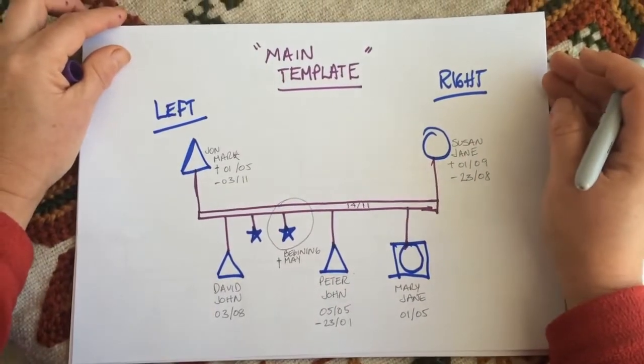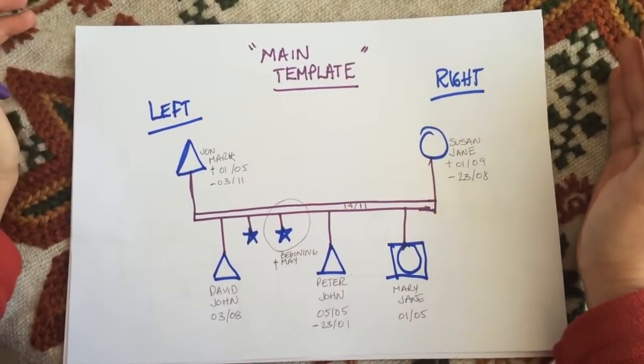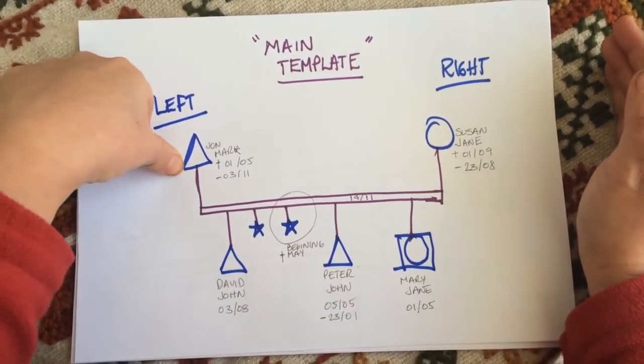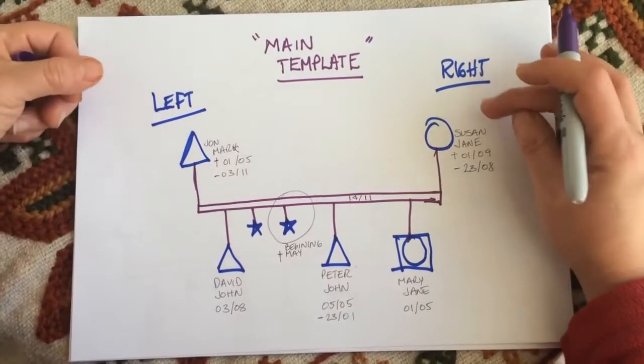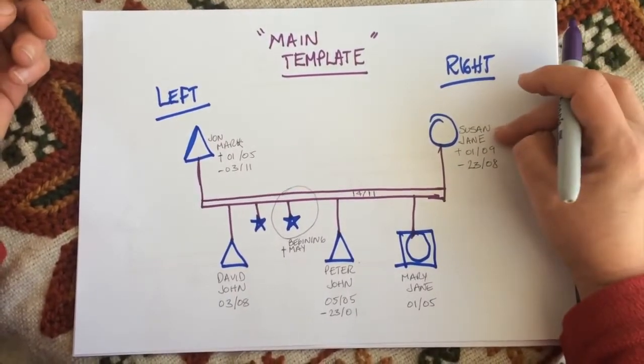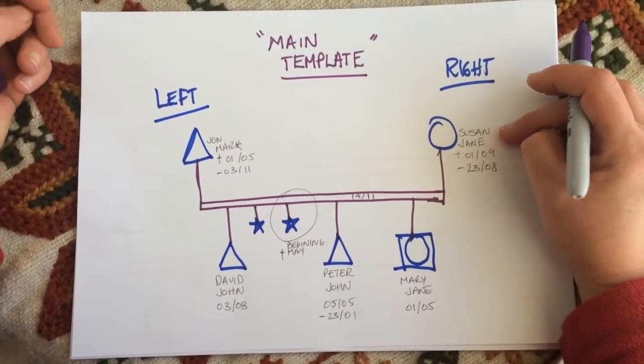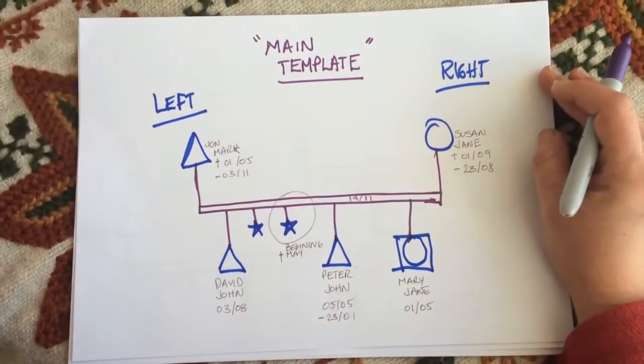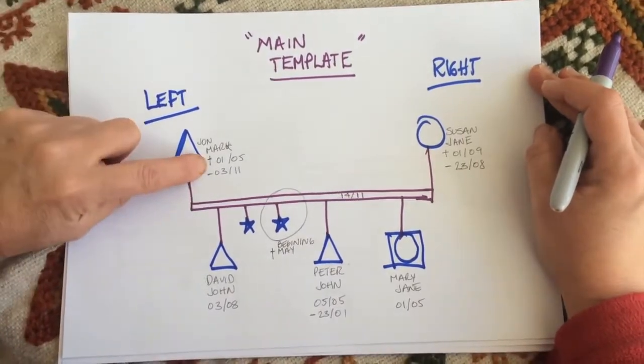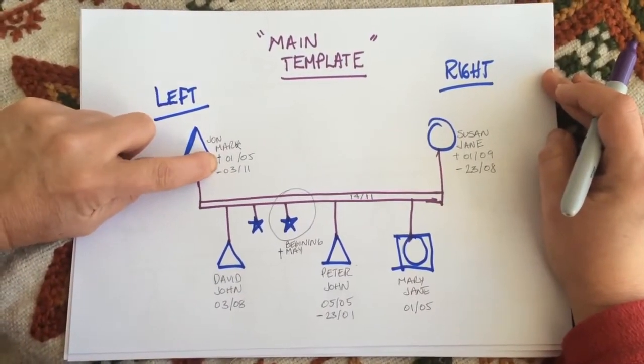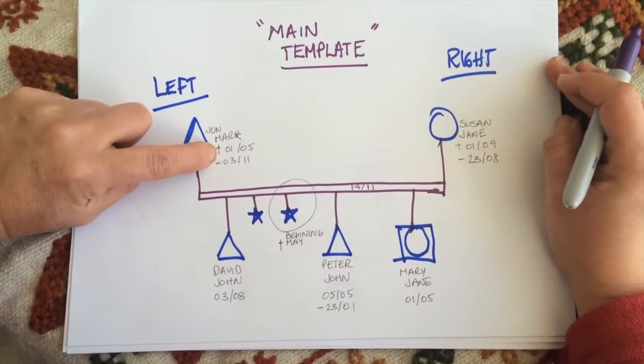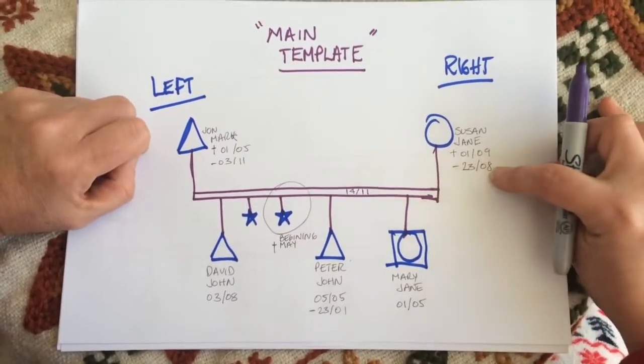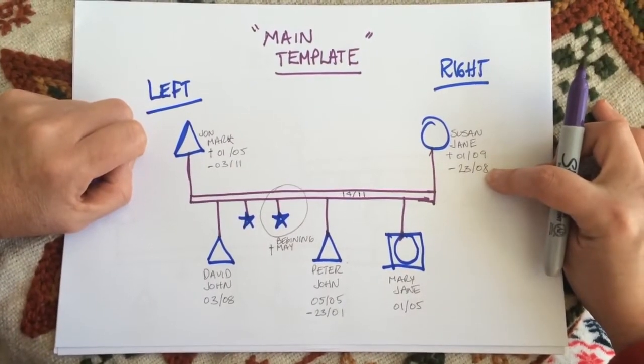The next part is the main template. I have incorporated some of the things I've already explained to this diagram already. Keeping the man, this will be John and the woman in the marriage, Susan on the right hand side. I have incorporated their names. The surname is self-explanatory from the beginning. Mark has died so I give his death, the date of his death, 1st of May and so has Susan so I indicate both birth and death dates.